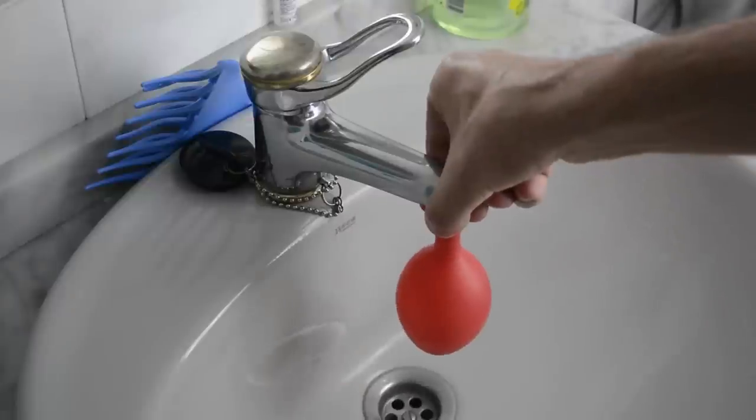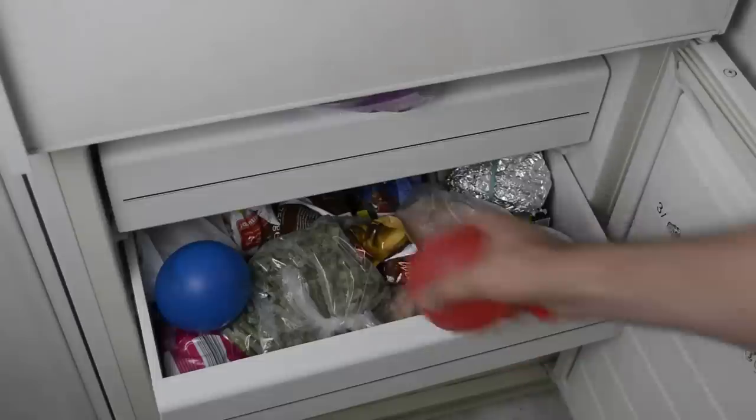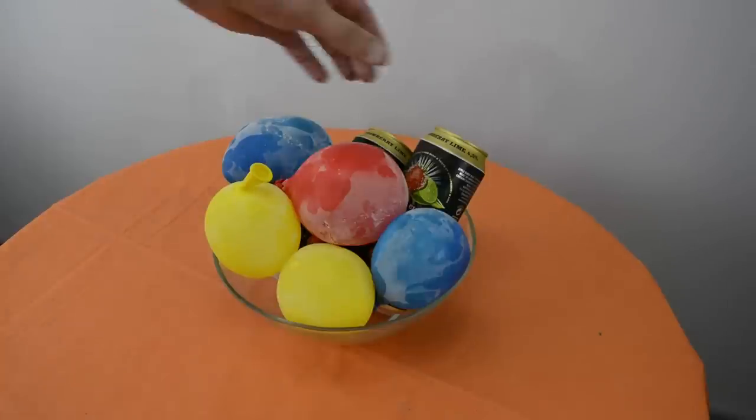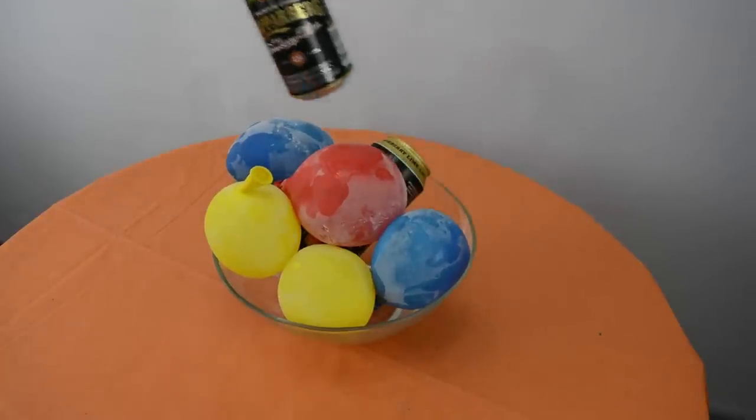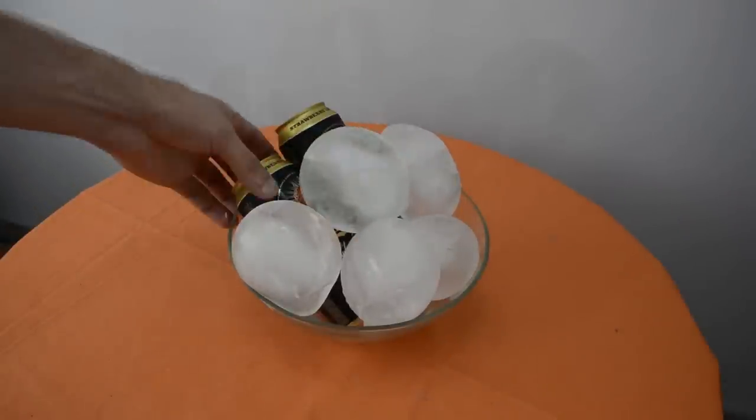Fill some balloons with water. Now tie a knot and stick them in the freezer. Now you have fancy drink coolers or huge ice balls if you decide to take them out from balloons.